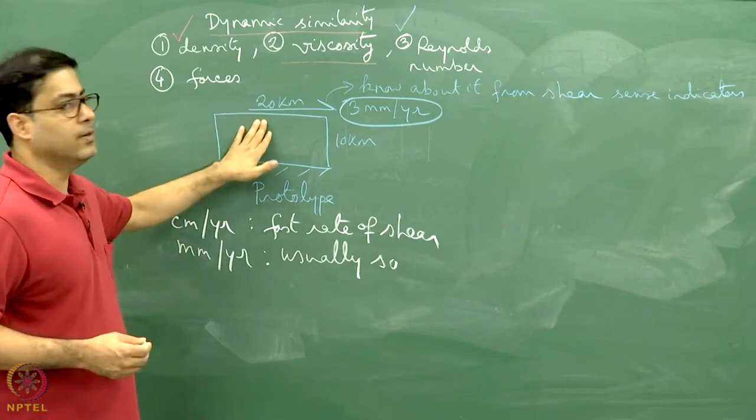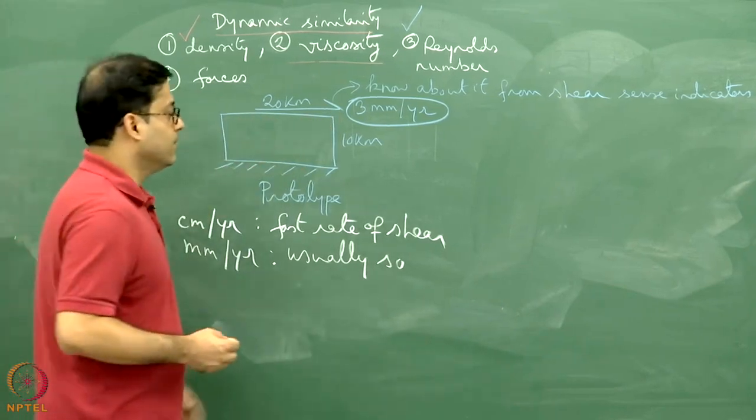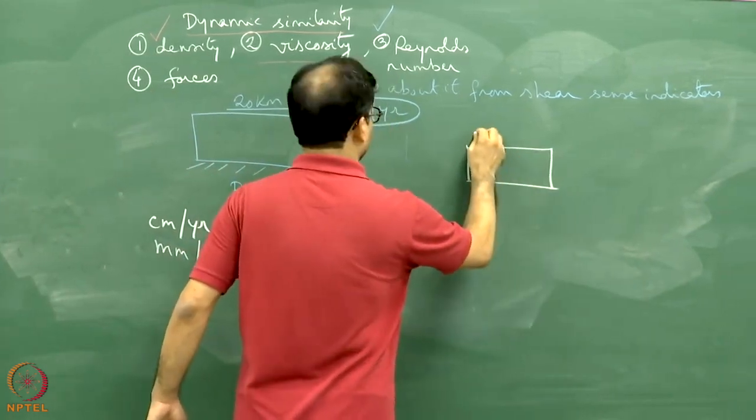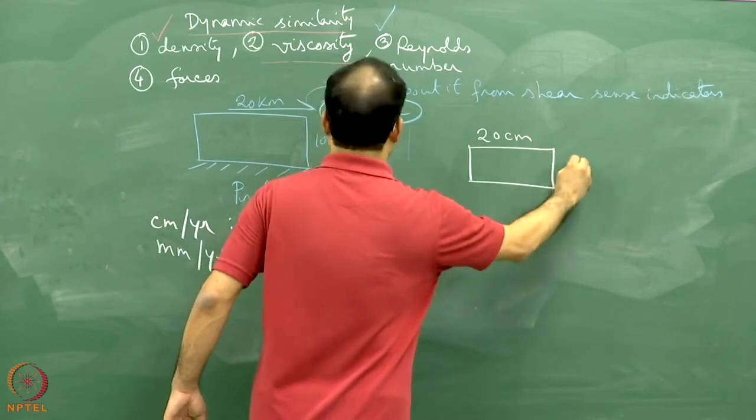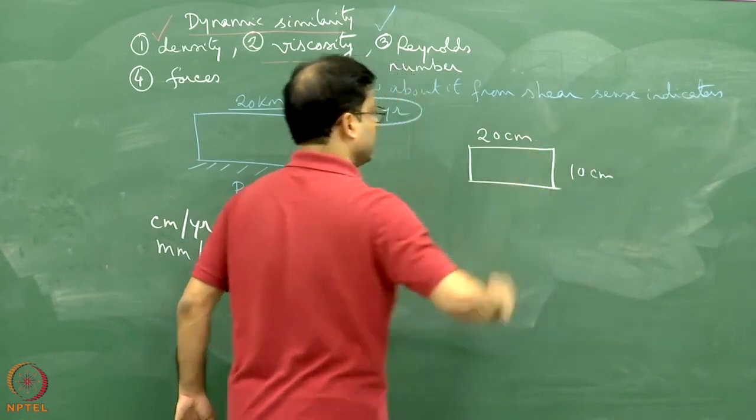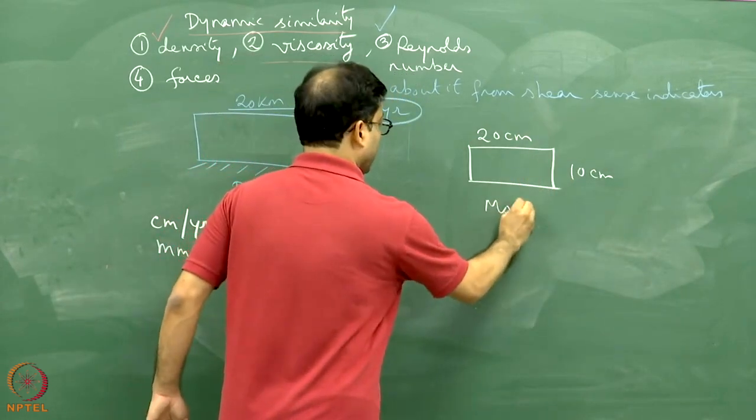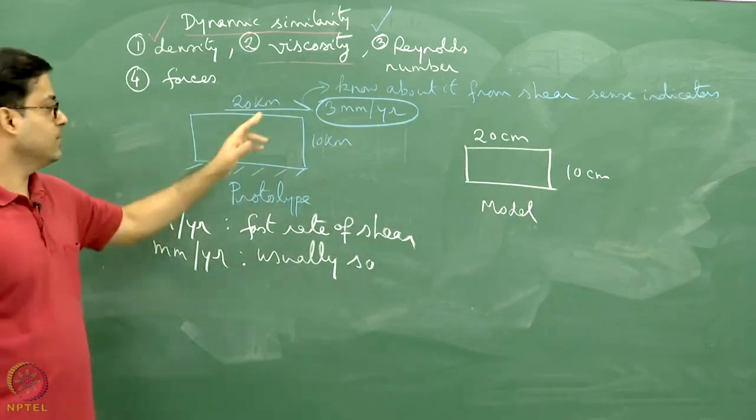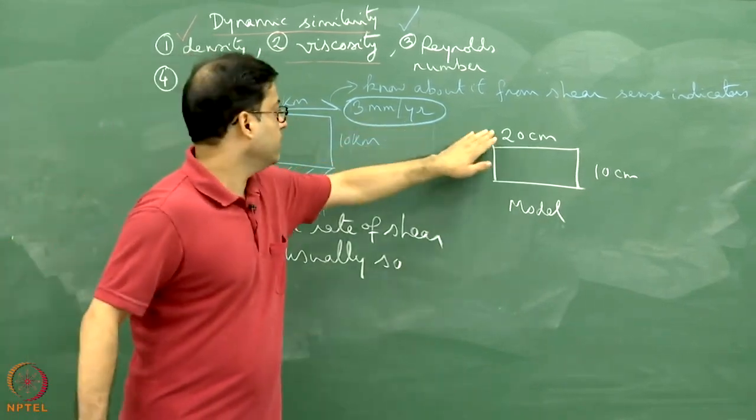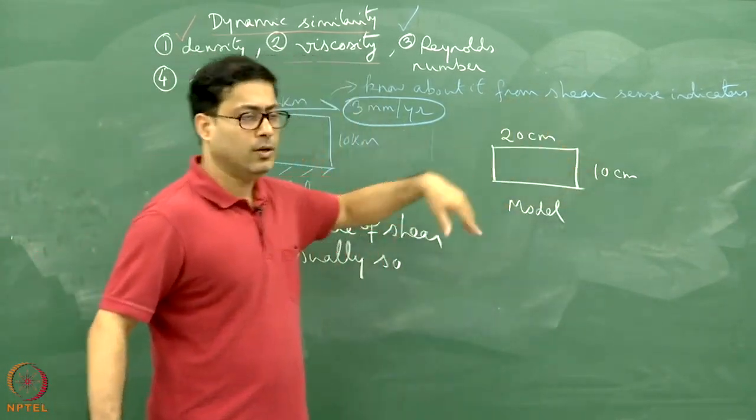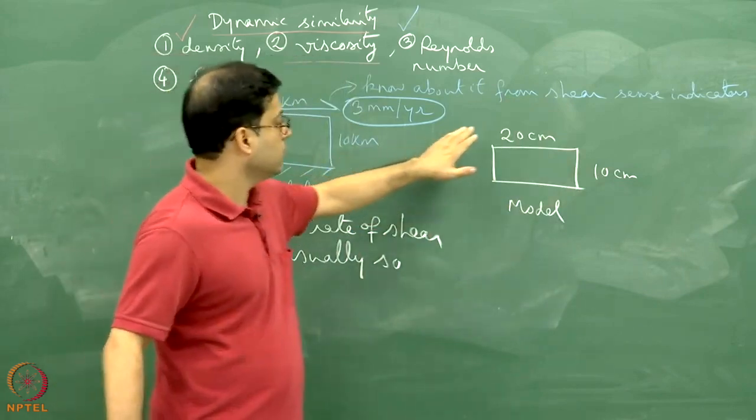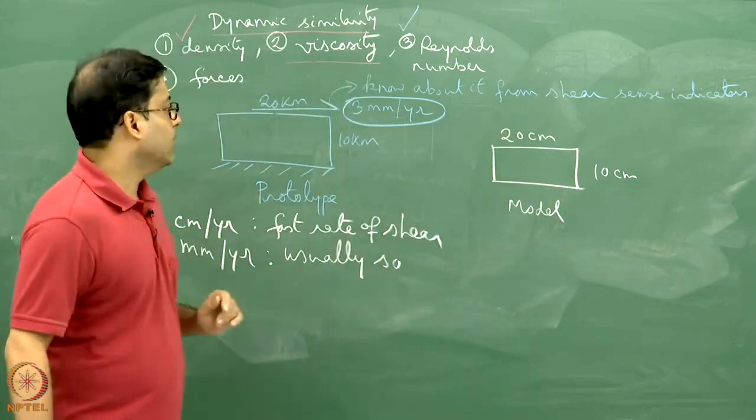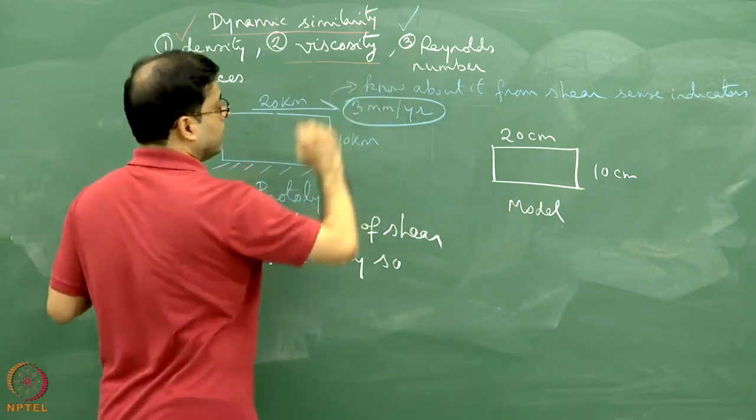Now this deformation I want to simulate in laboratory. First thing I will do is I will maintain a geometric similarity. I will take a clay layer. Let us say this will be 20 centimeter long and 10 centimeter wide. The moment it is done, we say that this model is geometrically similar with the prototype. Because you see 20 kilometer by 20 centimeter is equal to 10 kilometer by 10 centimeter. Or in other words, 20 kilometer by 10 kilometer is equal to 20 centimeter by 10 centimeter. So geometric similarity is done.